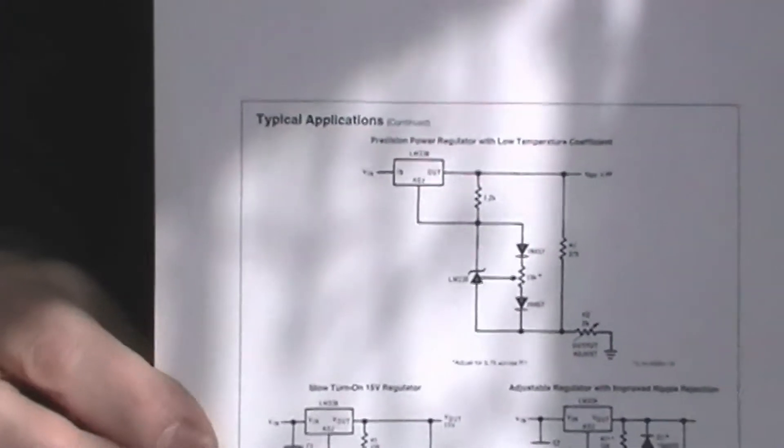Now I first come across it when I was looking at the LM317 and its big brother the 338, which apparently is a 5 amp version of the 317, and it gave this diagram and referred to it as a precision power regulator with low temperature coefficient.